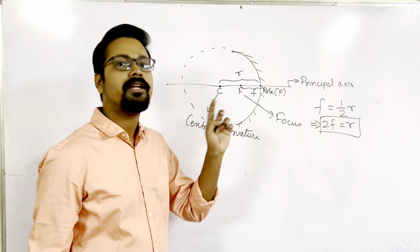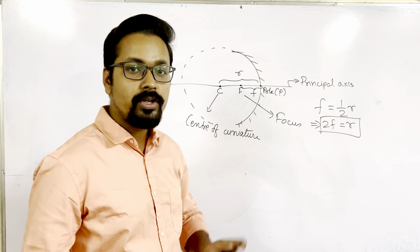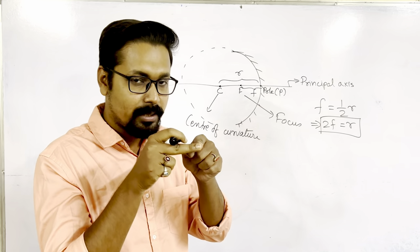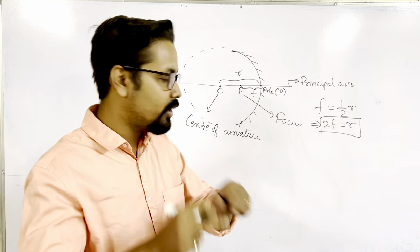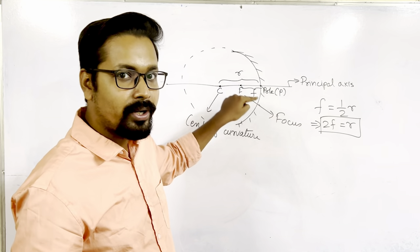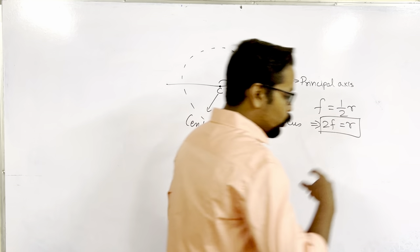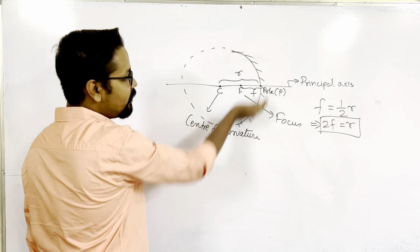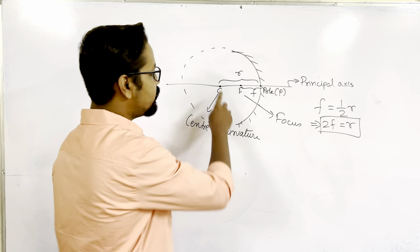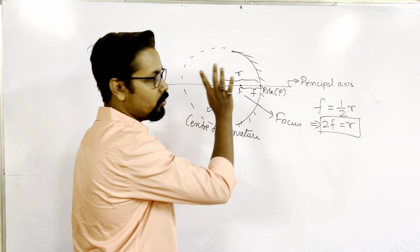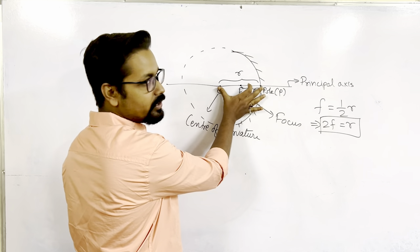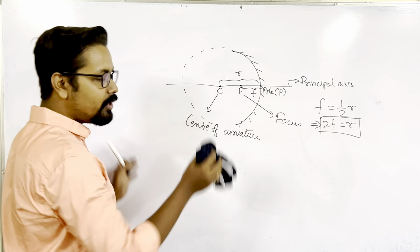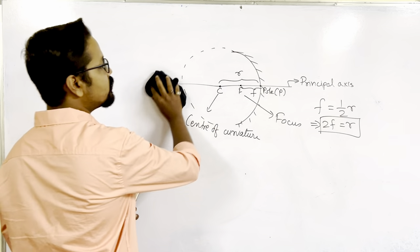The reason this point is called the focus will become clear when we draw the diagrams — 'focus' means something is concentrated at that particular point. So let's go ahead and draw the ray diagrams for spherical mirrors, starting with the concave mirror.